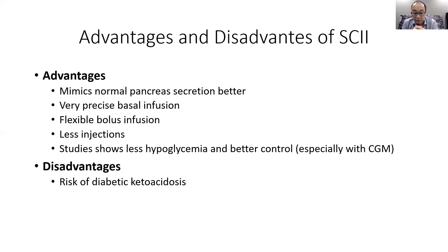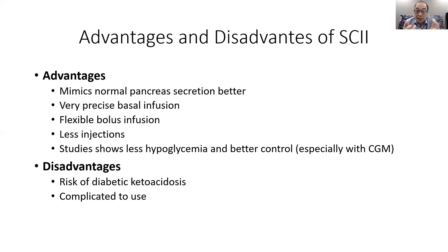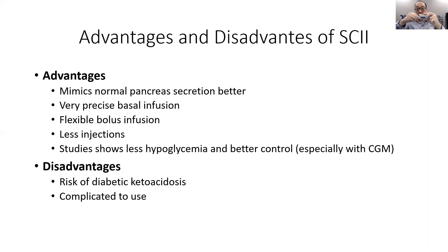Another disadvantage is that compared to pens, insulin pumps are quite complicated to use. As seen in the previous menu, there are many options to choose from, whereas with a pen you simply dial up your dose. It takes significantly more time to learn how to use all the functions properly. Lastly, insulin pumps can be very expensive — this model cost about five thousand dollars when it first came out, and supplies like infusion sets and reservoirs can add hundreds of dollars per month, compared to the simpler one-time cost of an insulin pen.